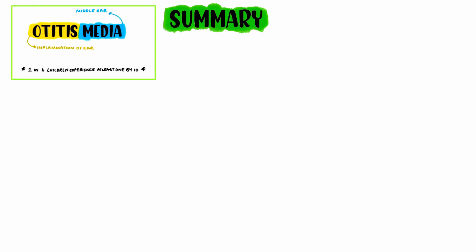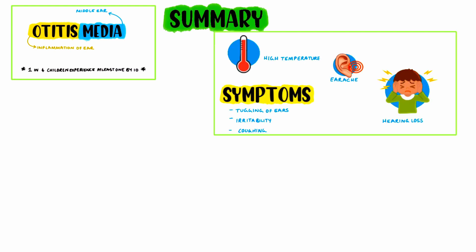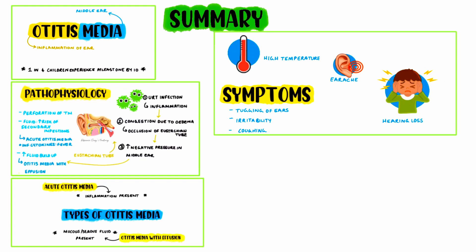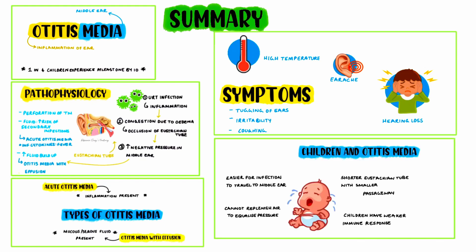Now let's have a little summary about everything that we've discussed in this video. Firstly, we had a look at the definition of otitis media, which is inflammation of the middle ear. Then we moved on to look at the symptoms of this condition, which included high temperature, earache, and hearing loss. The symptoms can also be slightly different in infants. The two main types of otitis media include acute otitis media and otitis media with effusion. Otitis media is usually caused by an upper respiratory tract infection, which leads to inflammation and eventually the two different types. Children are more prone to ear infections like otitis media due to the anatomical and physiological differences within their body compared to adults.